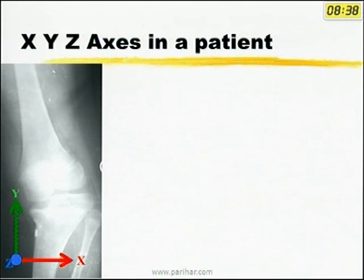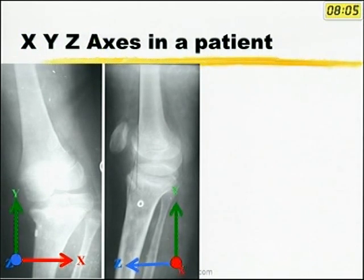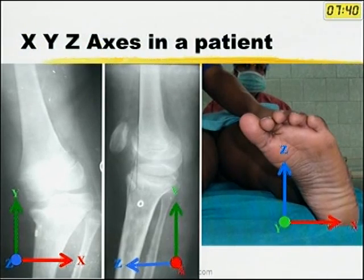On an AP X-ray you are imaging the deformity in the frontal plane. The Y-axis is vertical, the X-axis is horizontal, and the Z-axis is coming out at you. When you turn the patient for a lateral X-ray, the Y-axis still points up but the X-axis has turned towards you. On the lateral view, the Y-axis still points up, the Z-axis now goes sideways, and the X-axis points out at you. On the axial view, you are looking down the Y-axis, which is coming out at you, and the Z and X-axes are in the plane of the image.